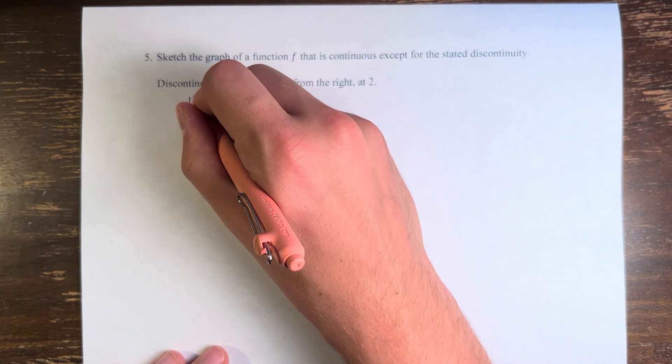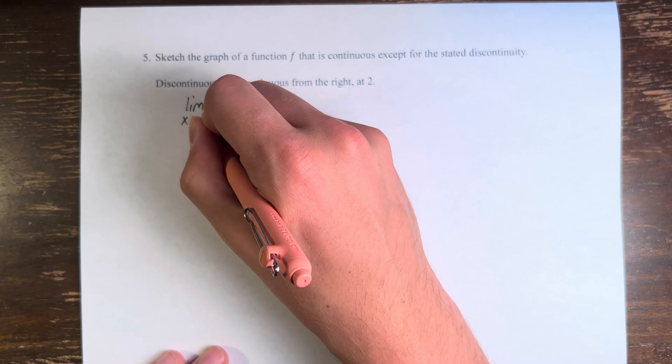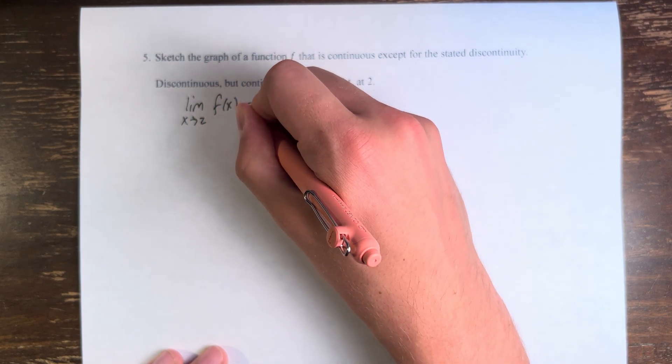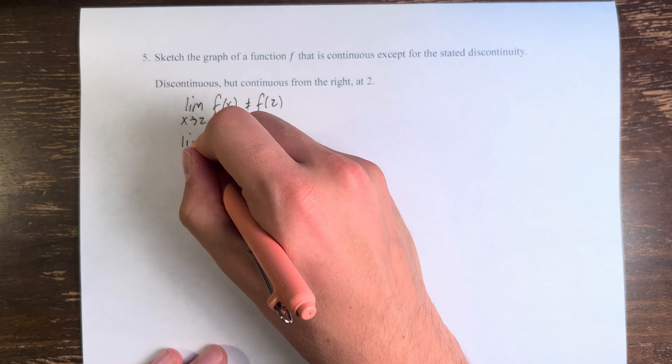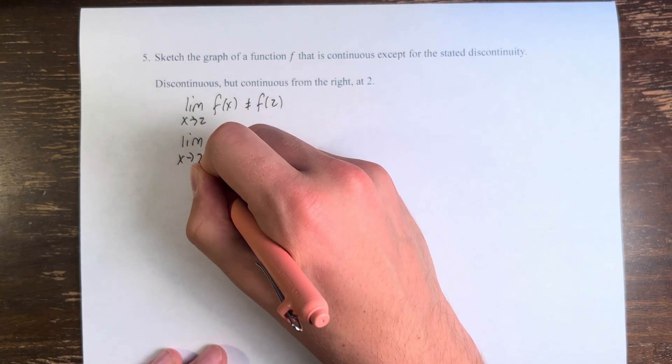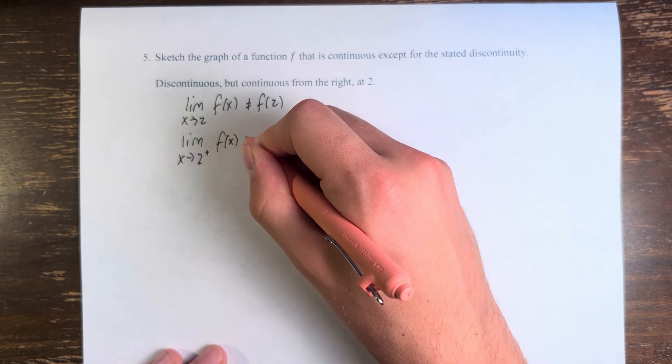So it is discontinuous, which means that the limit as x approaches 2 of this function is not equal to f of 2, but it is continuous from the right, which means that the limit as x approaches 2 from the right of f of x does equal f of 2.